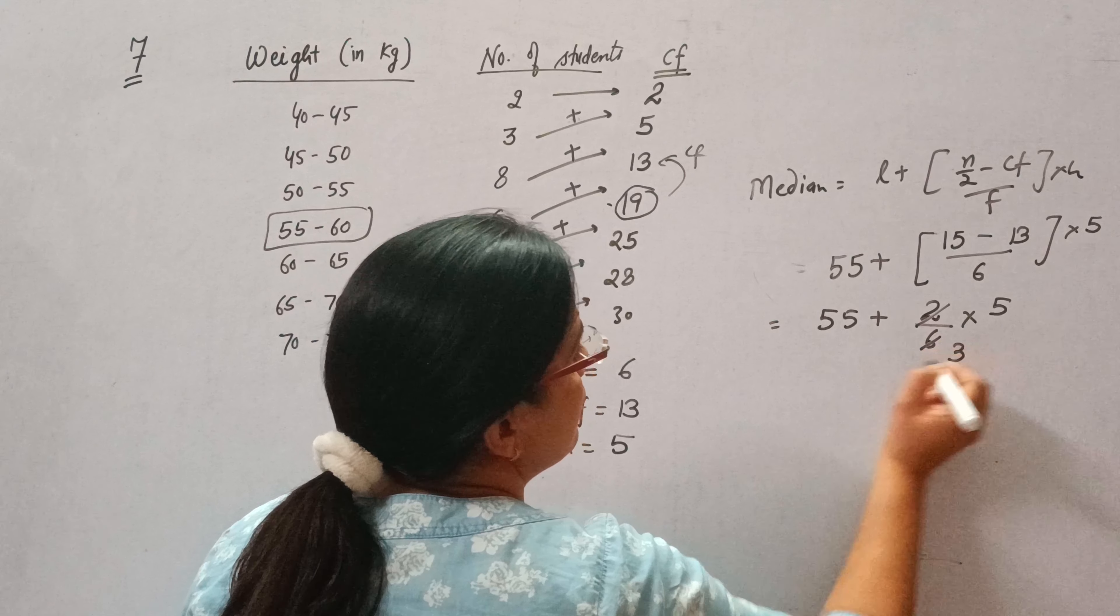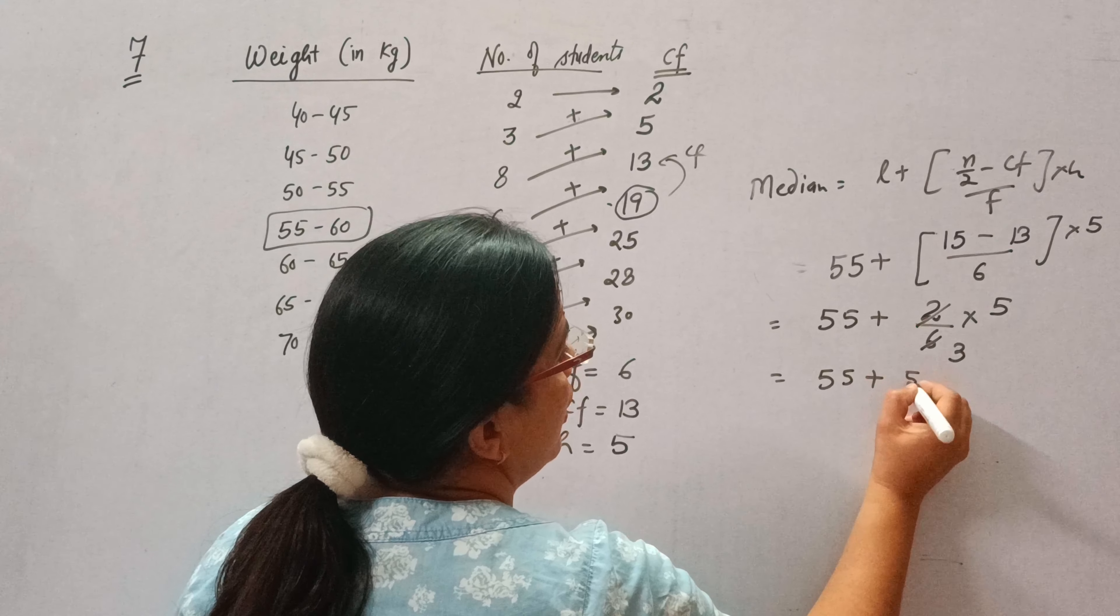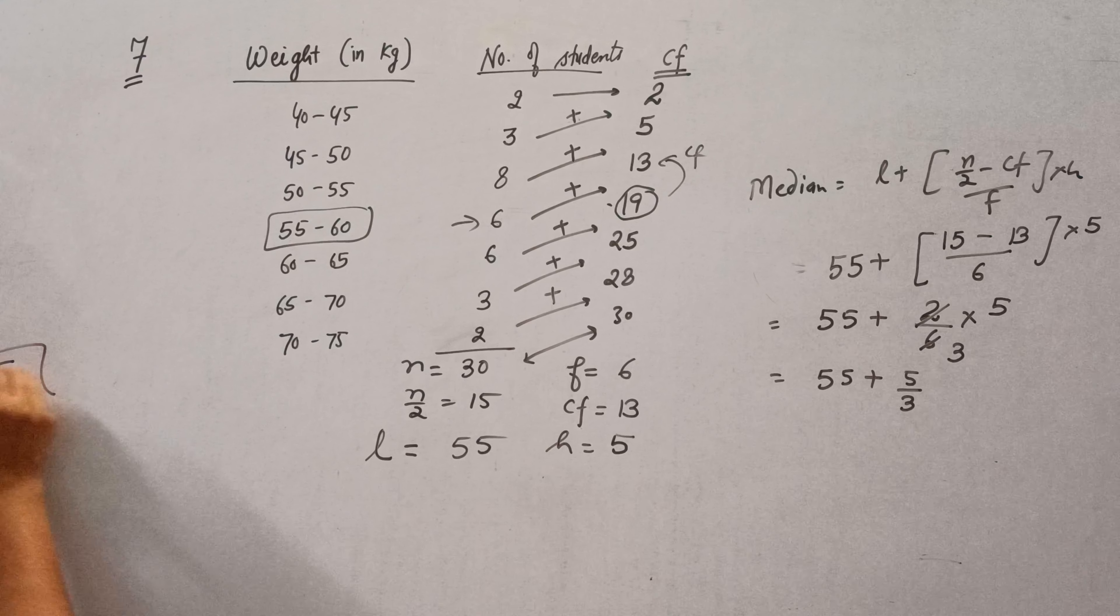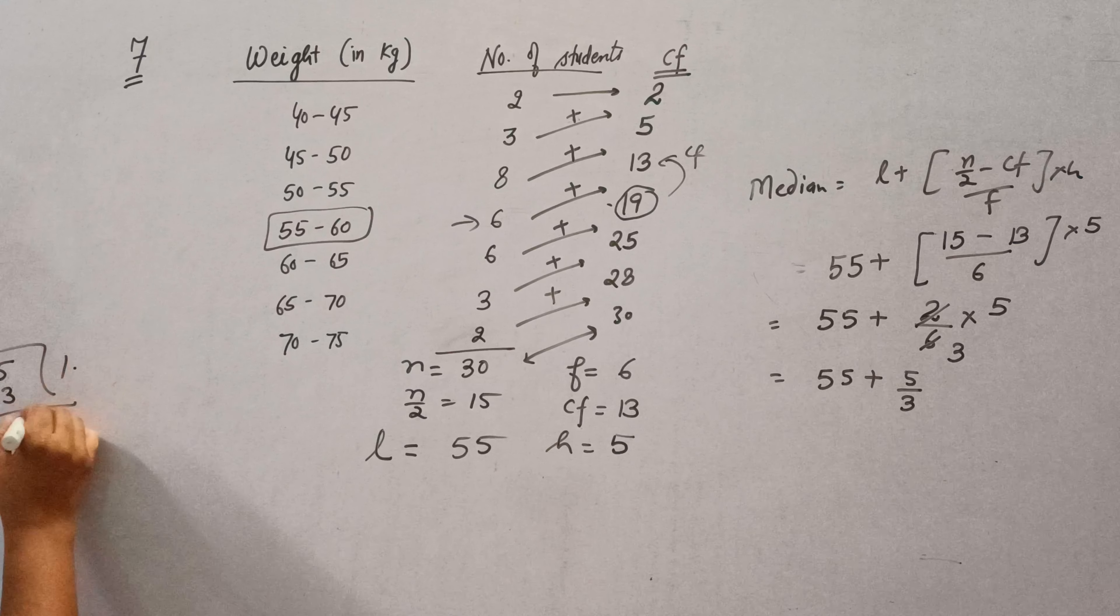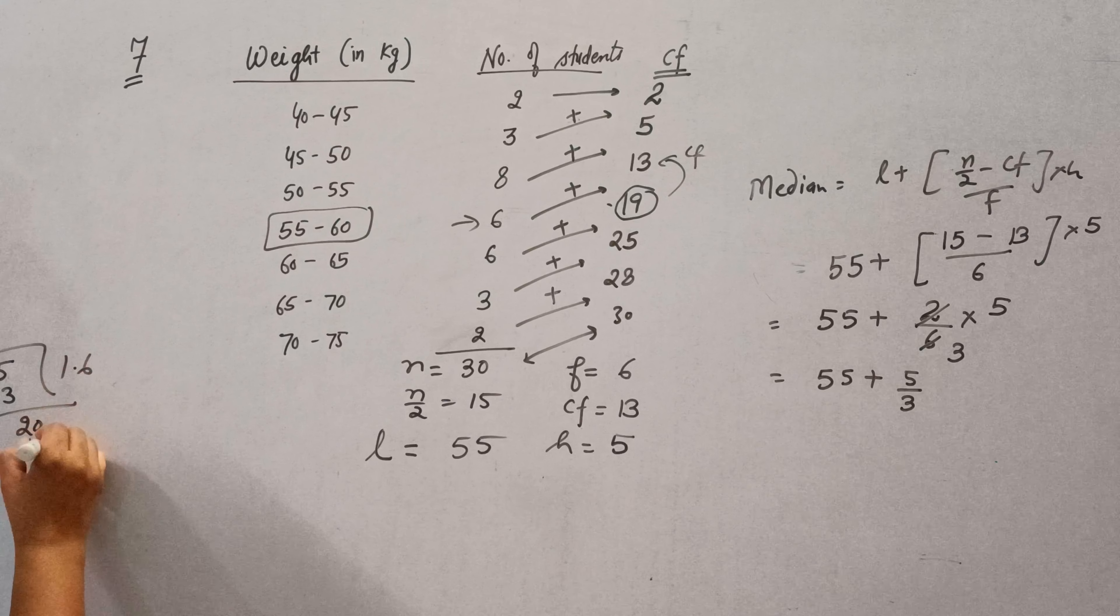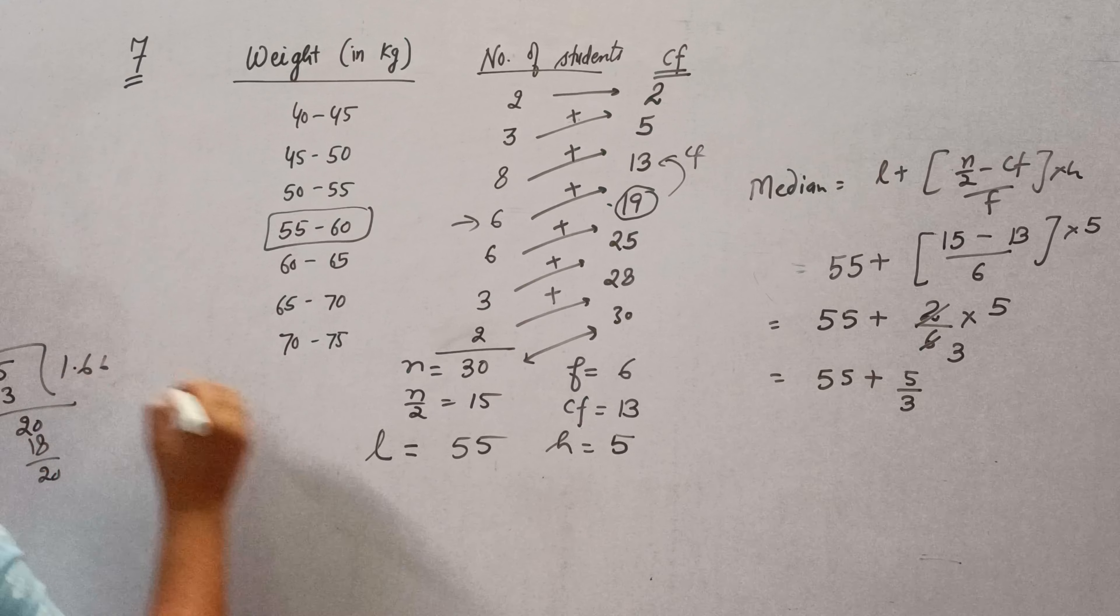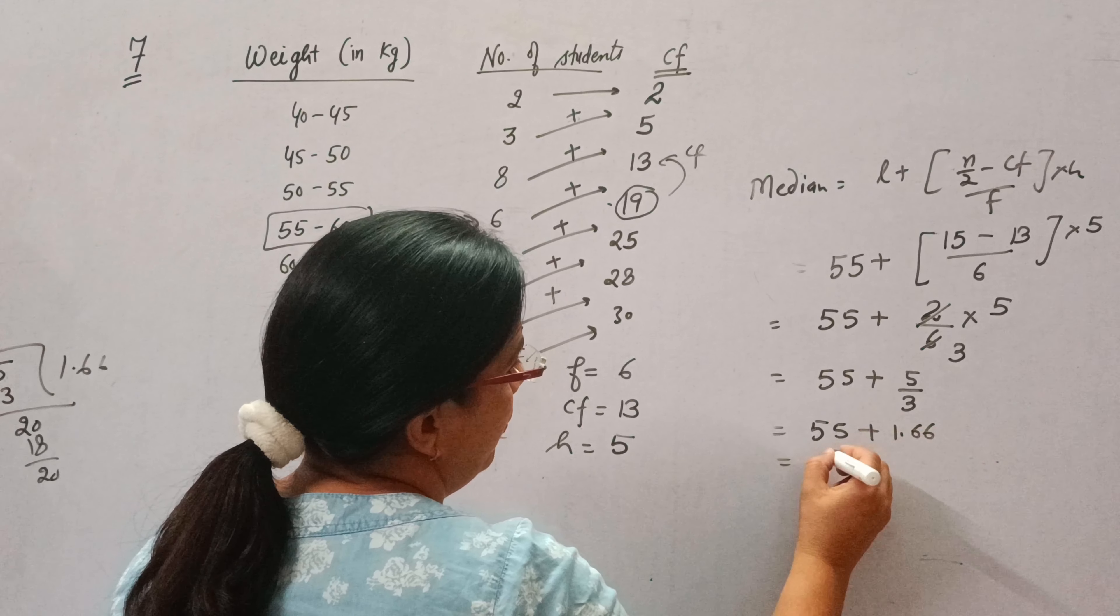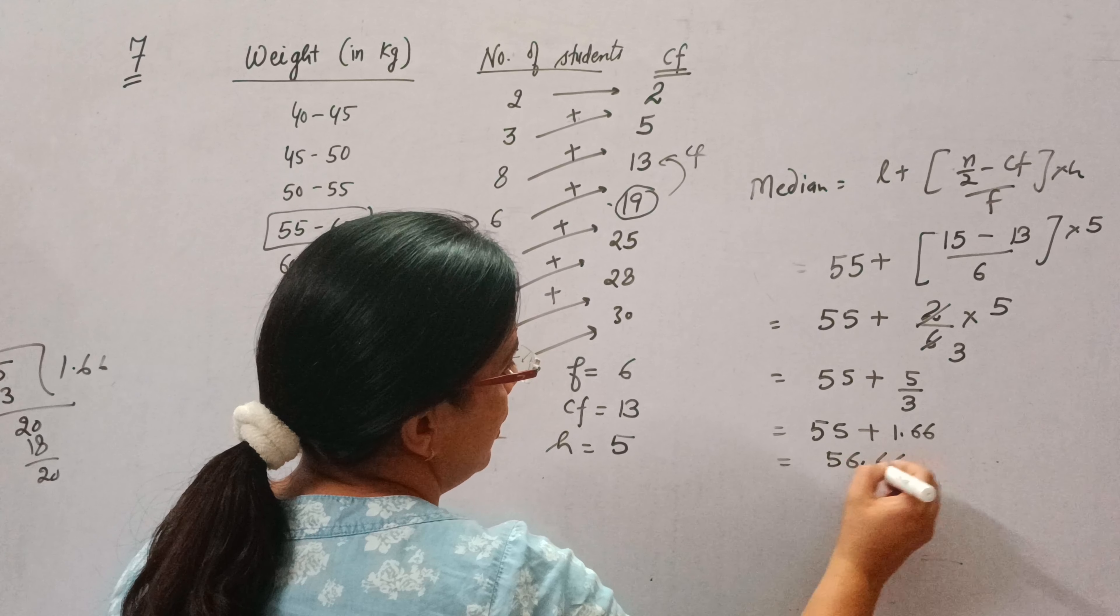2 upon 6 is 1 by 3. So 55 plus 5 by 3. Divide 5 by 3: 3 into 5 is 1, put decimal, 3 into 20 is 6, 1.66. So it will be 56.66.